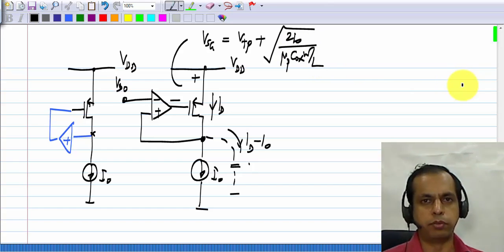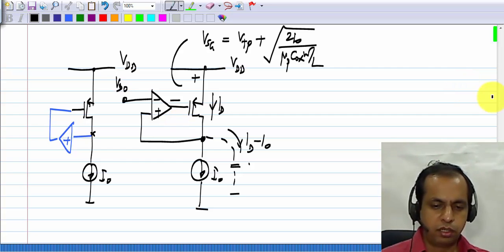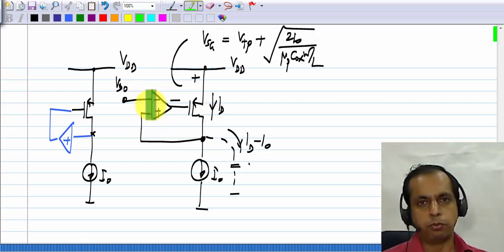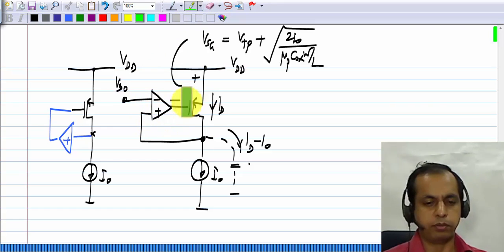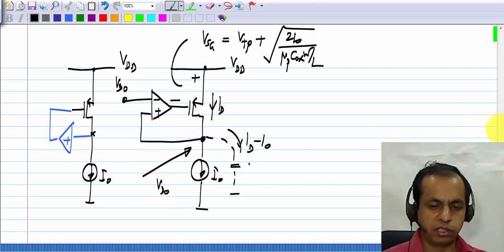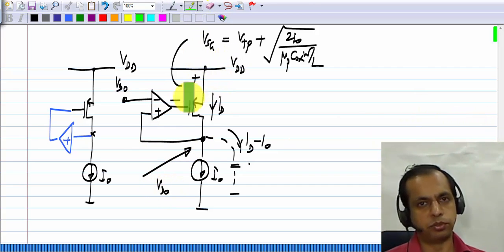Now, that is fine, that part you know already, but what is so special about this circuit? Because we have an op amp, and let us assume it is an ideal op amp, these two terminals will be virtually shorted because of the negative feedback loop. So, this voltage will be exactly equal to V D 0, and it is independent of the supply voltage and transistor parameters and so on.